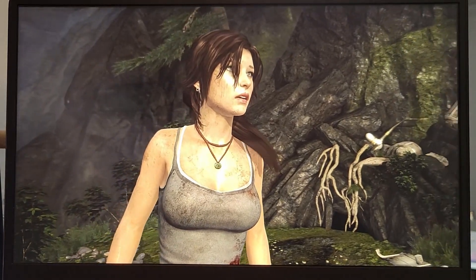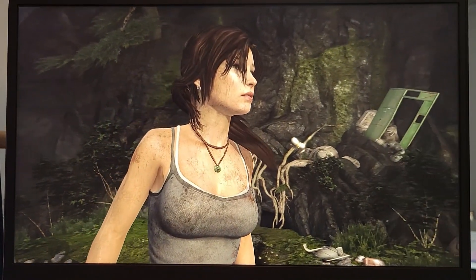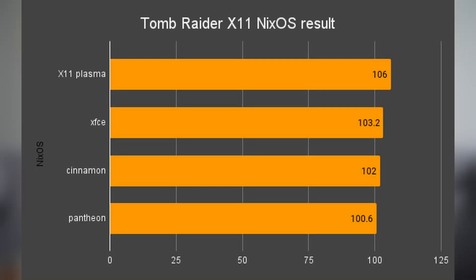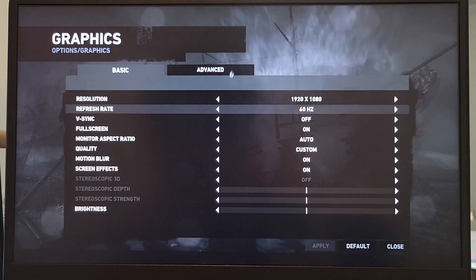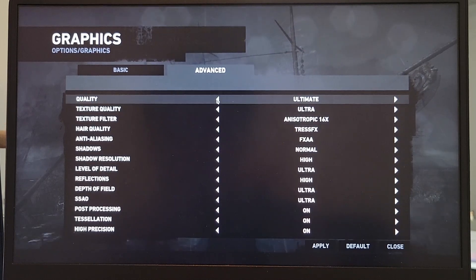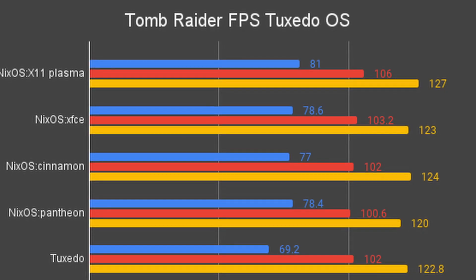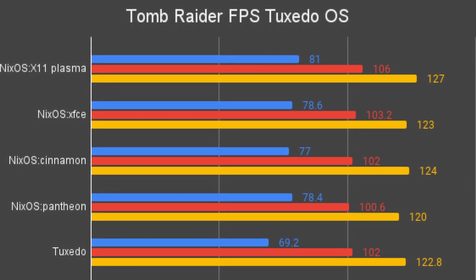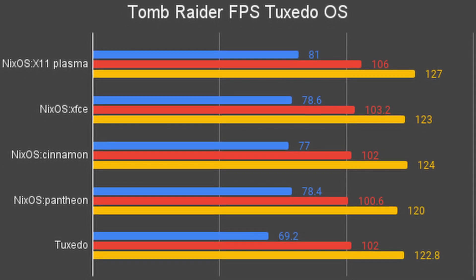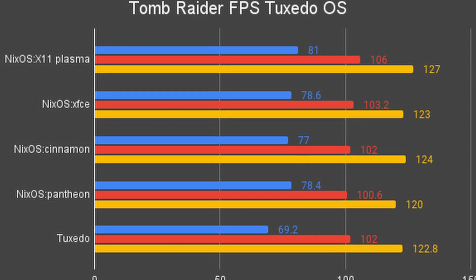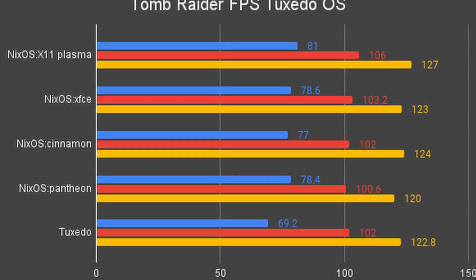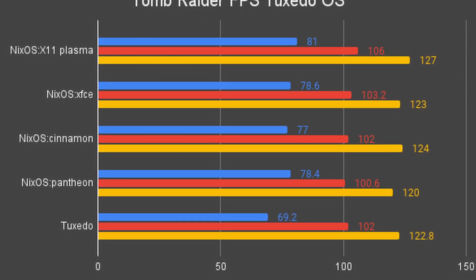Then I tested Tomb Raider. This game gave a constant 100 FPS average on NixOS X11 with the max refresh rate set to 60 Hz. In Tuxedo performance mode with the same refresh rate on ultra settings, I got 69.2 FPS minimum, 122.8 FPS maximum, and 102 FPS average. Similar result overall, but with a worse minimum FPS. Still playable.